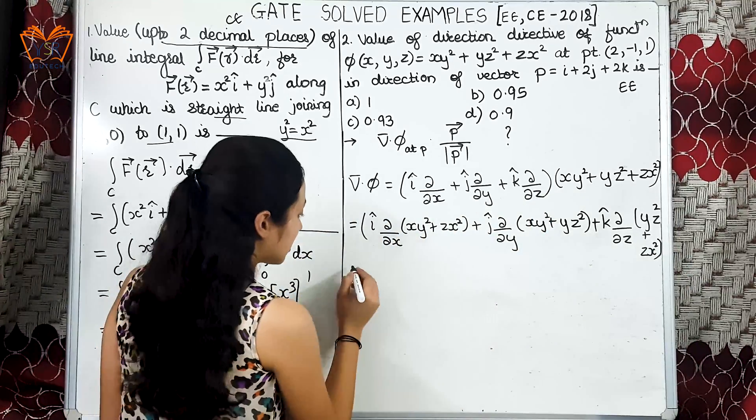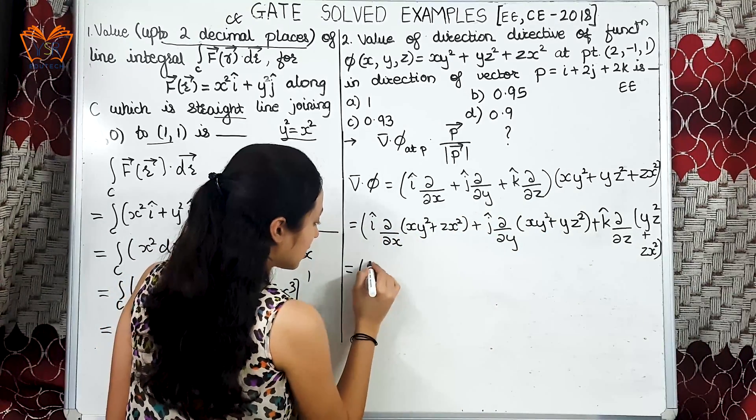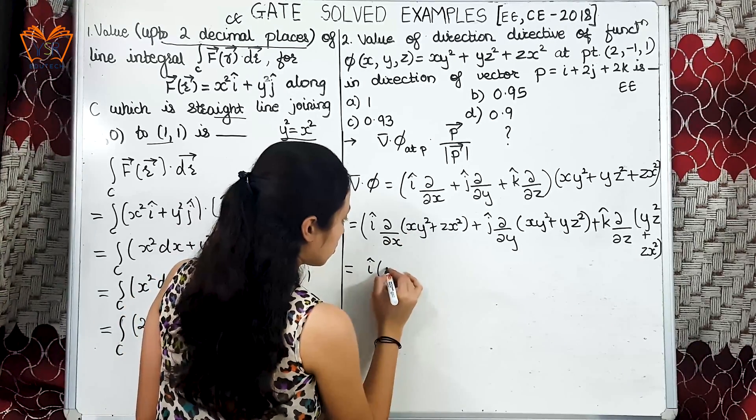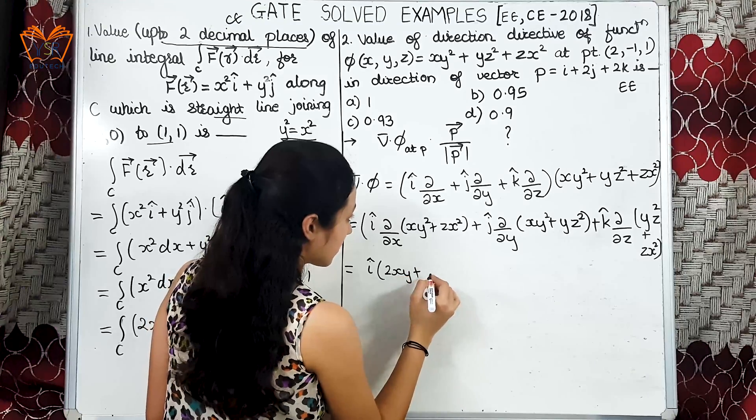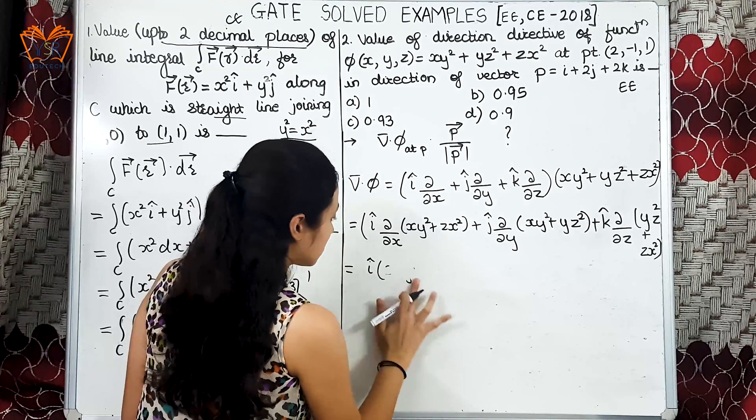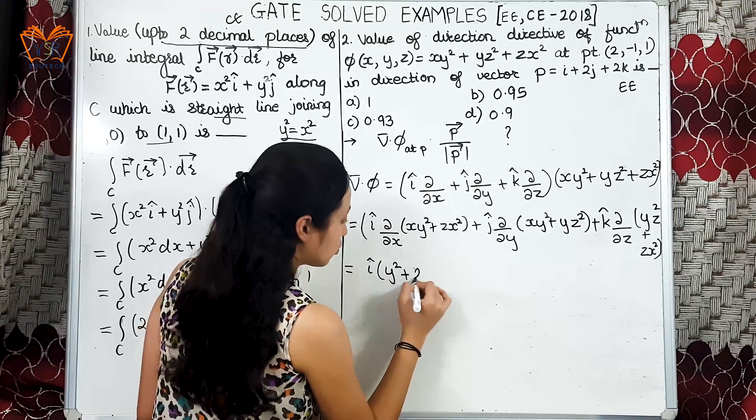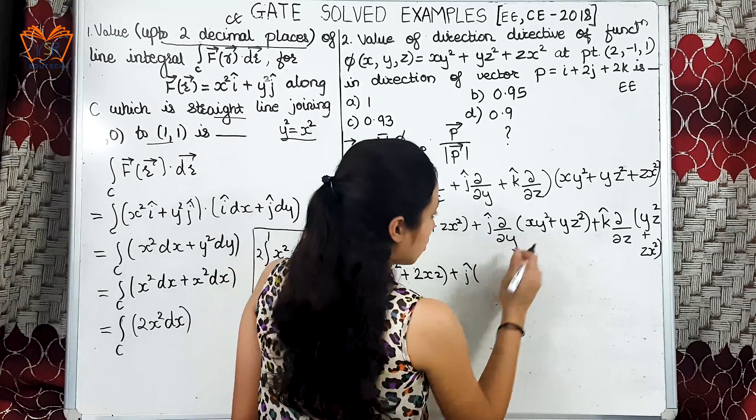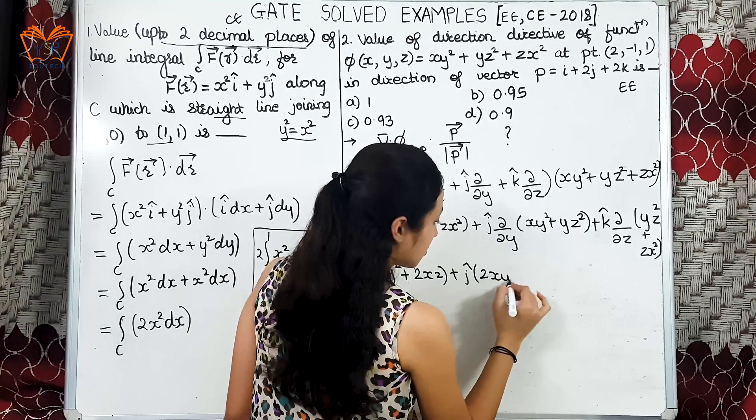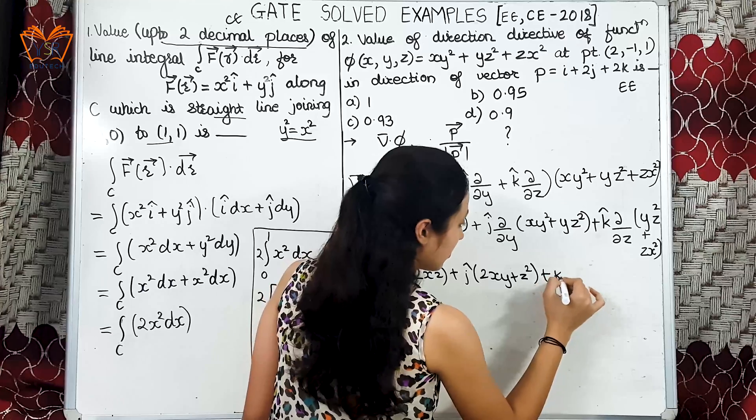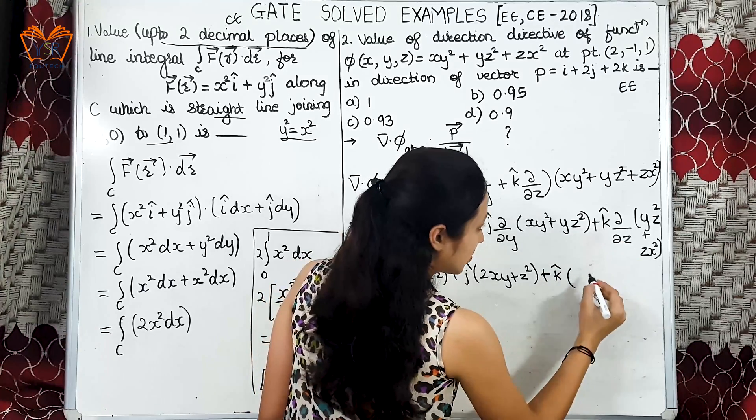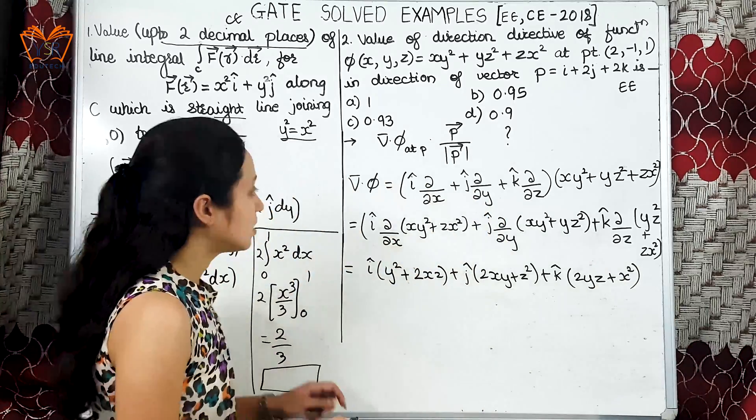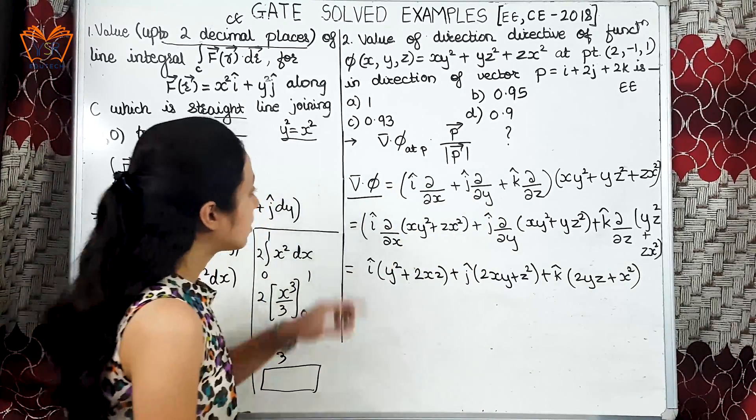Let us find the derivative. We get i cap, this will be y square plus 2xz, plus j cap 2xy plus z square, plus k cap that will be 2yz plus x square. This is the answer that we got, del into phi.